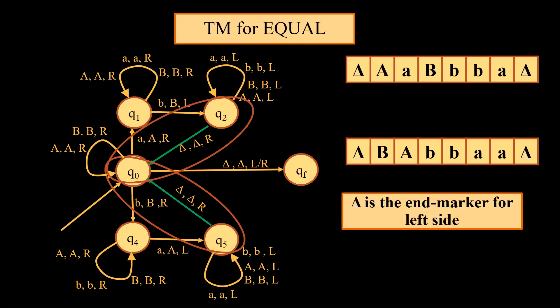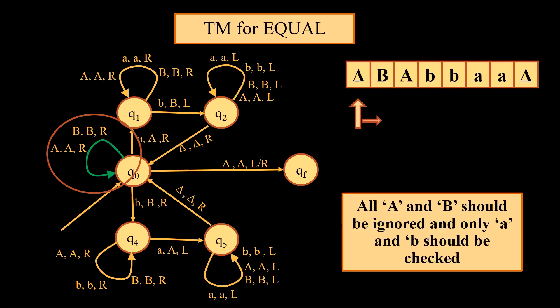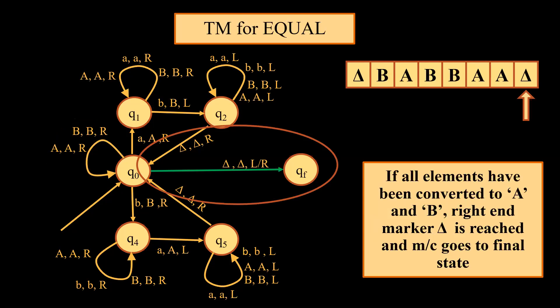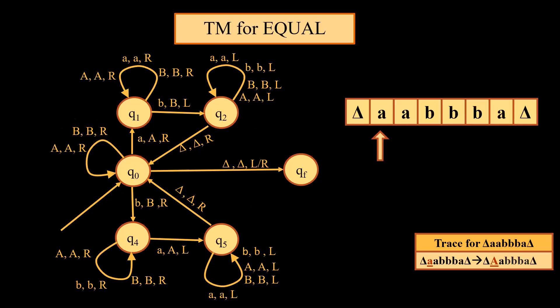Once we come across delta, we start moving towards the right. We have a self-loop on Q0 for capital A and capital B. Why? Because delta is serving as an end marker and we just need to ignore all capital A and capital B, since they have already been checked and converted. We keep traversing till the end, and if we reach delta on the right side, this serves as the right end marker of the tape. This clearly indicates that the machine has reached the final state.